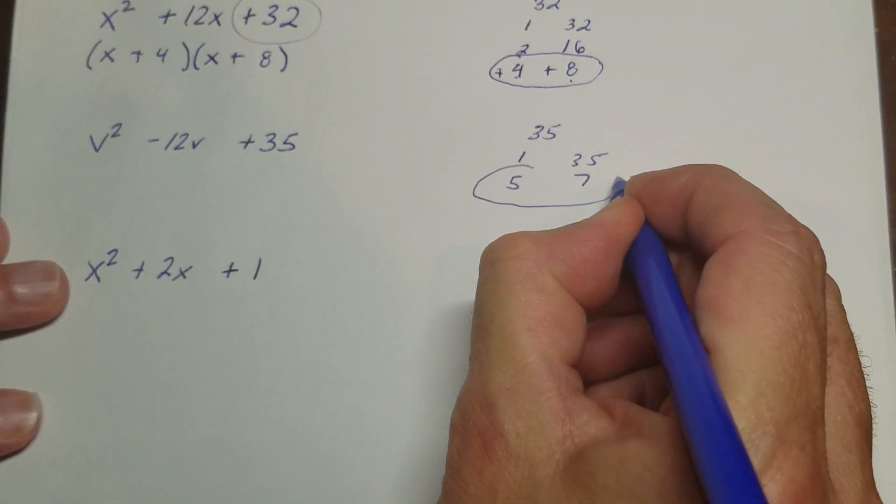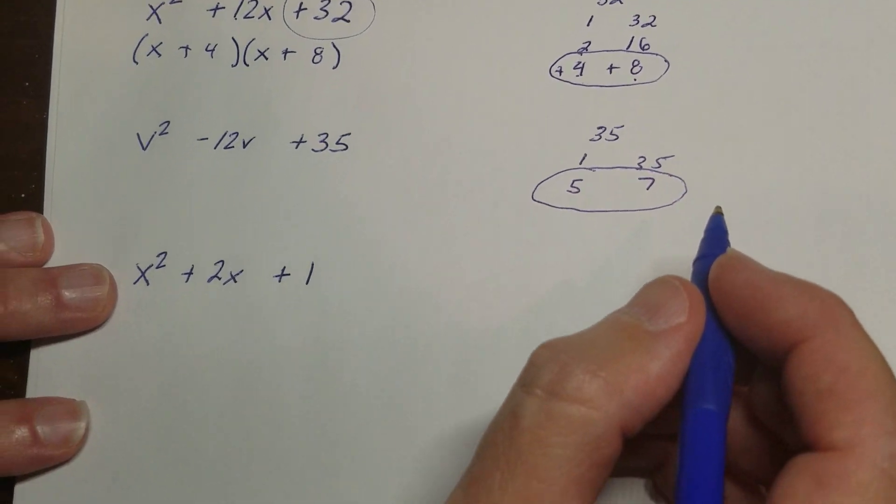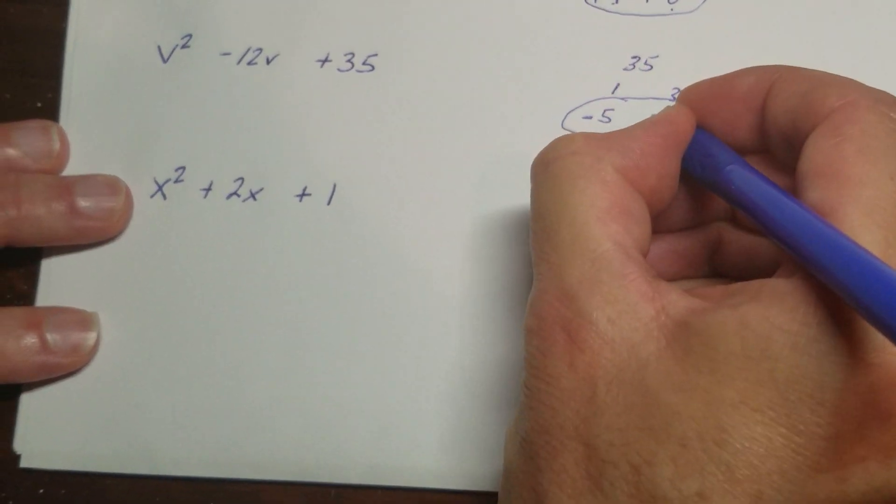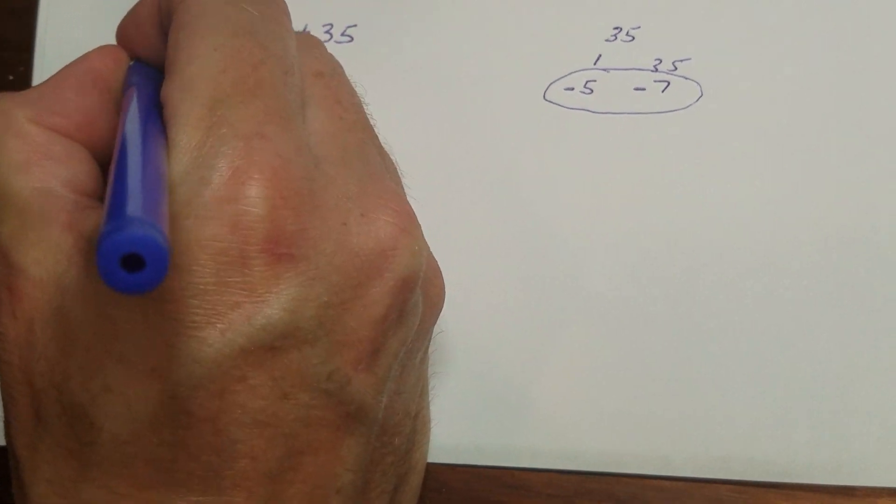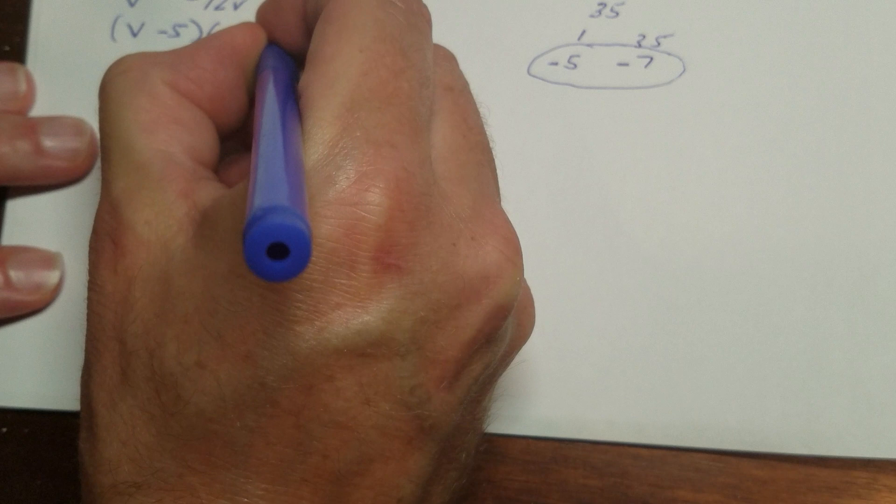So hopefully you realize this is what we're drawn to here. So I have to take the 5 and the 7 and make a negative 12. So that means that they're both negative. So I have (v - 5) times (v - 7).